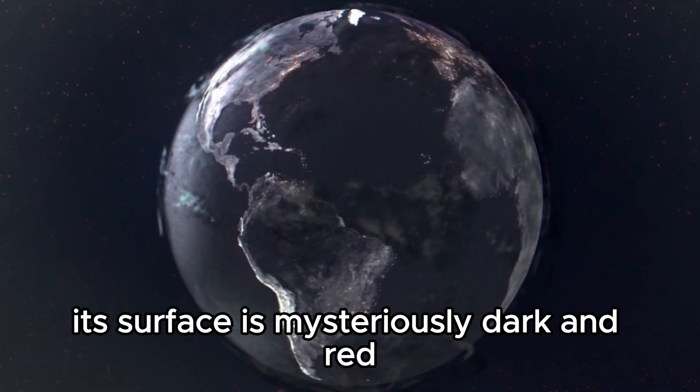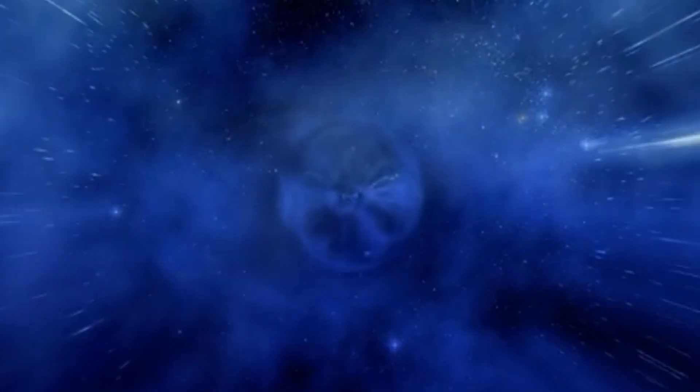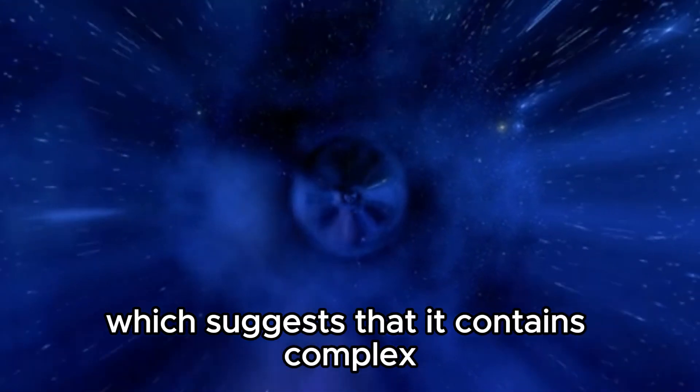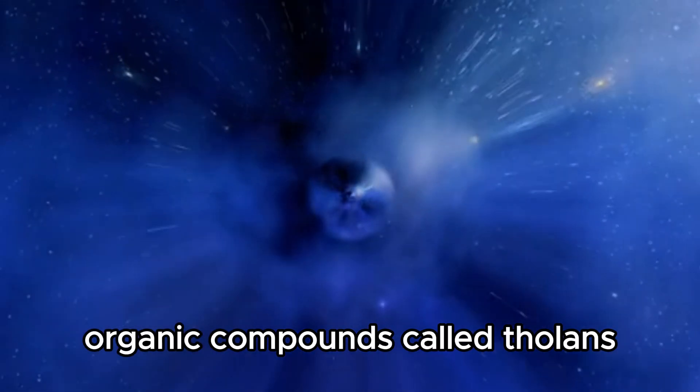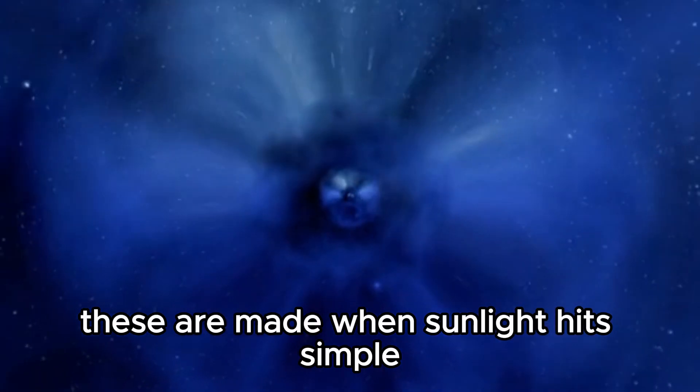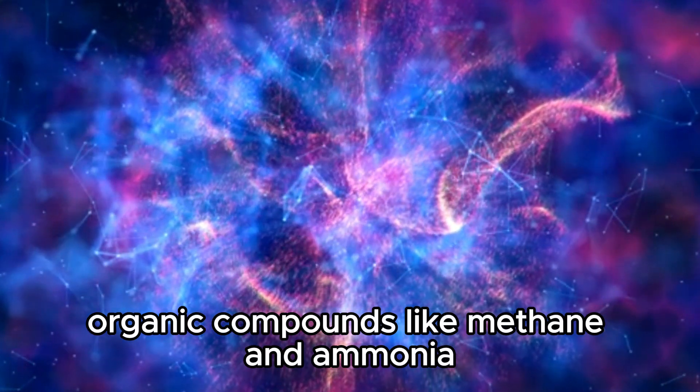Its surface is mysteriously dark and red, which suggests that it contains complex organic compounds called tholins. These are made when sunlight hits simple organic compounds like methane and ammonia.